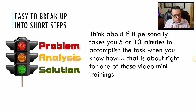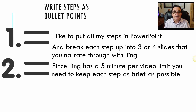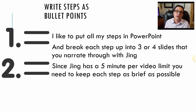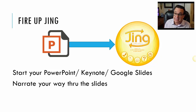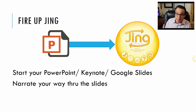Then you're going to write steps as bullet points. I like to put all my bullet points in PowerPoint and then break down each step into three or four slides that you basically narrate yourself through. Since Jing has a five-minute video limit, you have to be very brief — stepping through it very quickly. Then fire up Jing, start your PowerPoint, Keynote, or Google Slides, and basically narrate yourself through those slides, much like I'm doing right now with this slide deck. You could just emulate what I'm doing here.